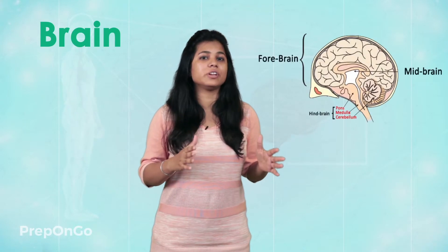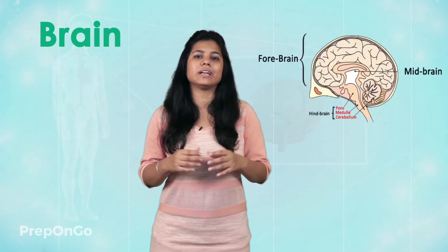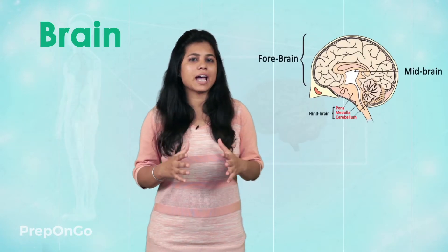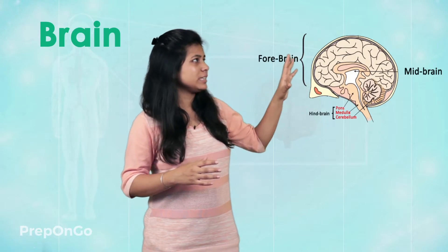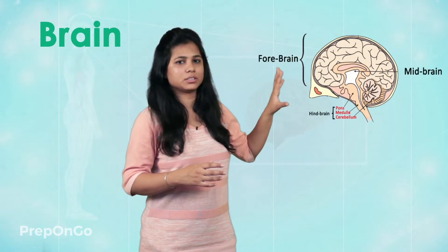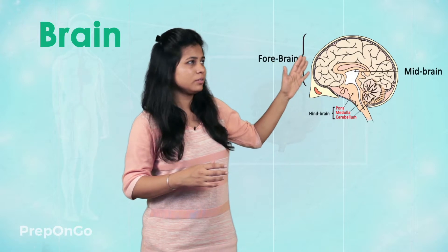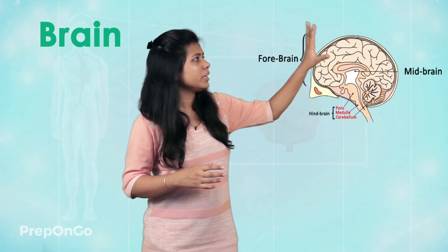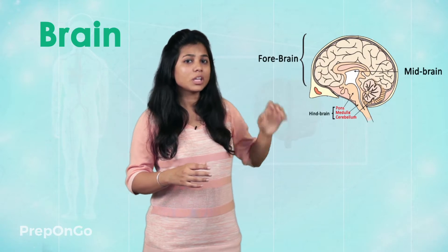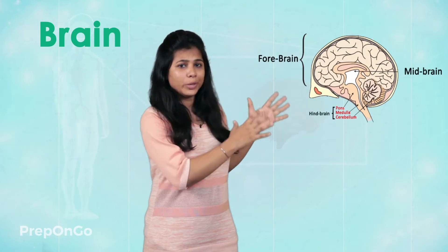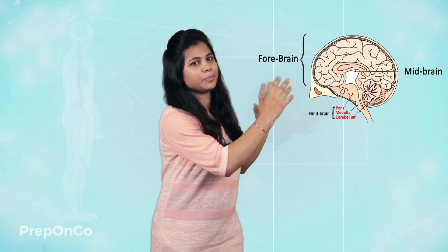Let's have a look at the controller of the central nervous system, which is the brain. The brain has different regions for different activities. Here you can see that the brain has three parts: the first is the forebrain, in the middle is the midbrain, and in the last is the hindbrain. We will understand each part separately.